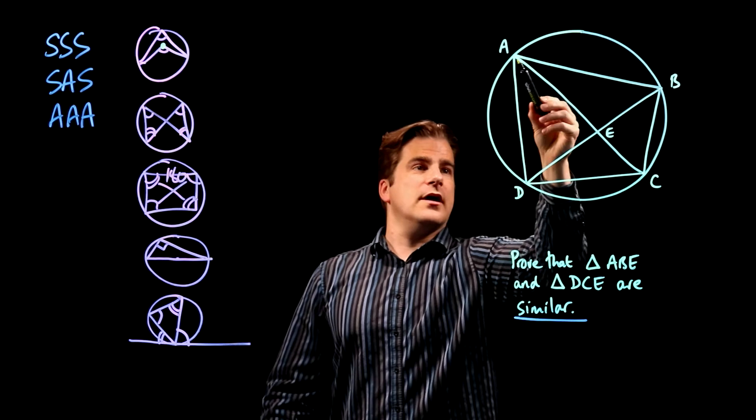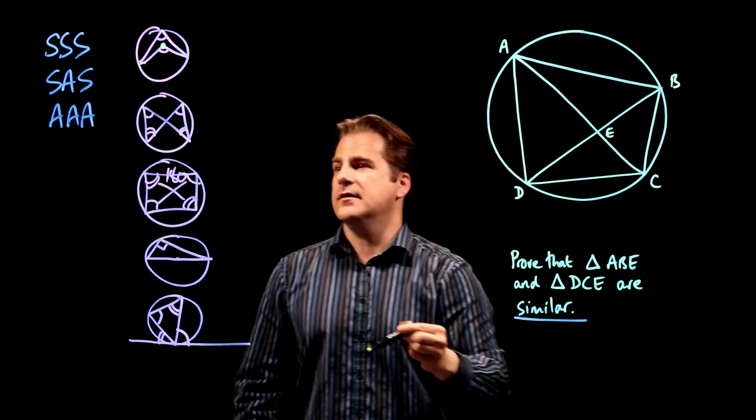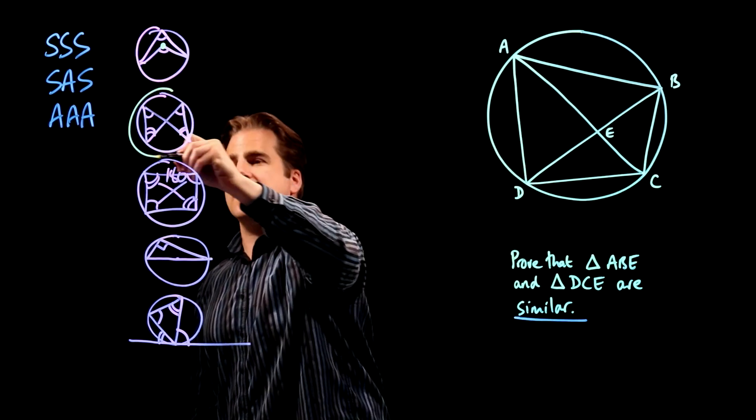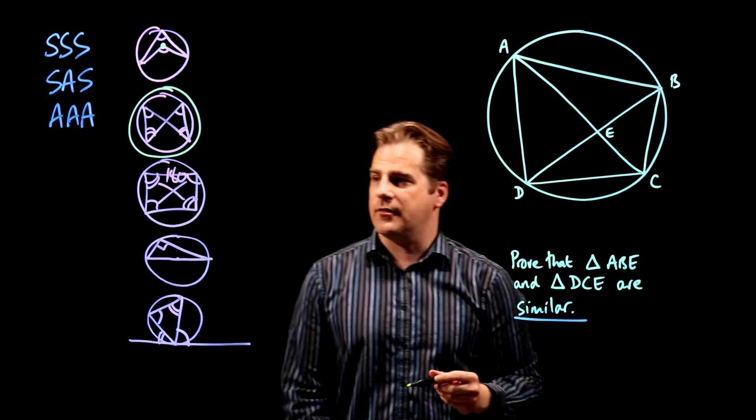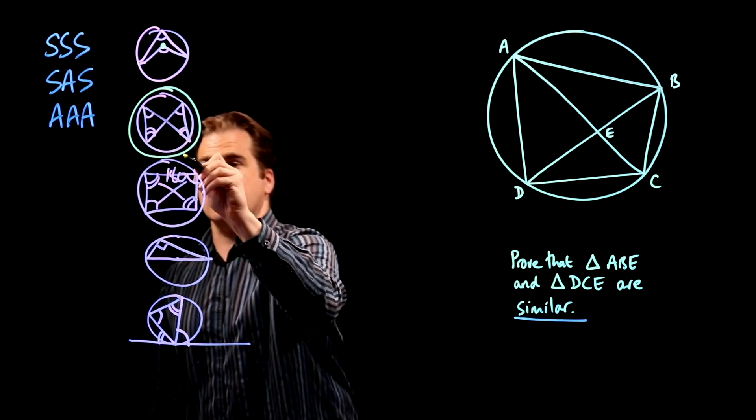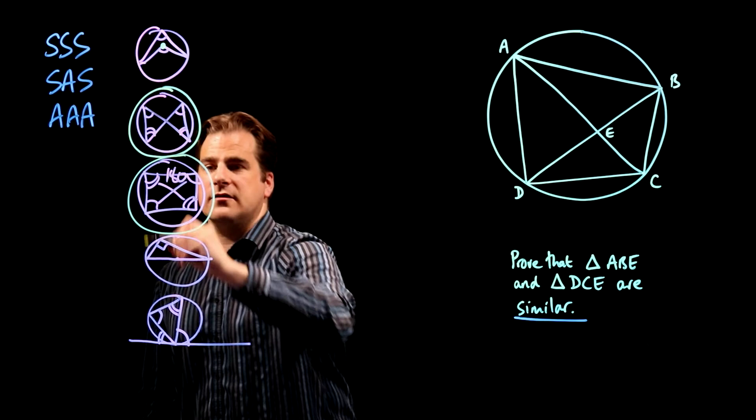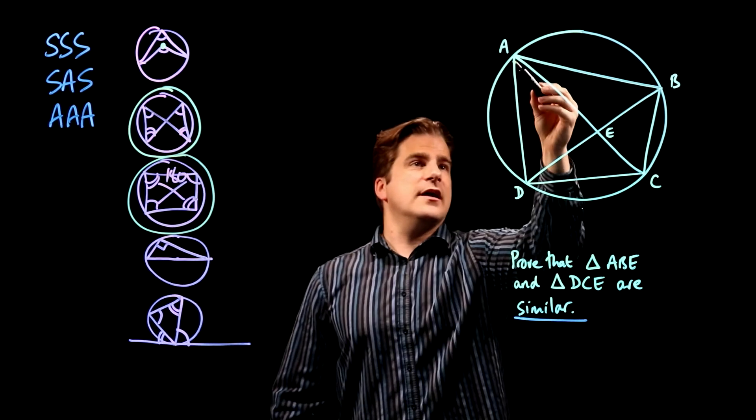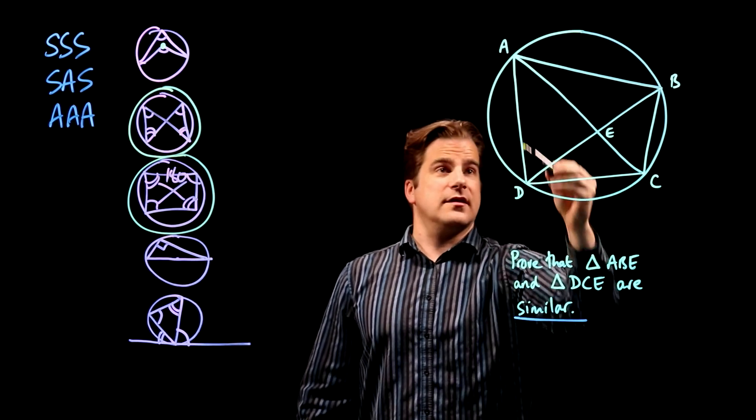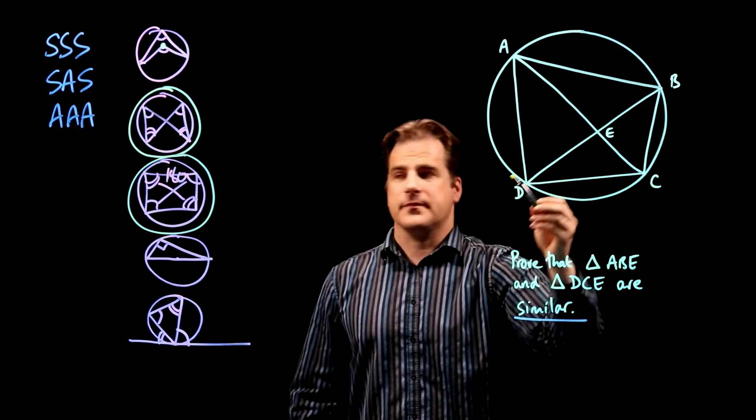There's definitely some bow ties here. I can see two bow ties. This one and that one. So let's keep an eye on the bow tie theorem, and also cyclic quadrilateral. We definitely have a cyclic quadrilateral there.